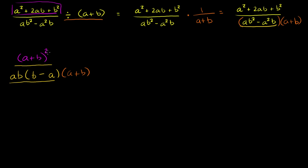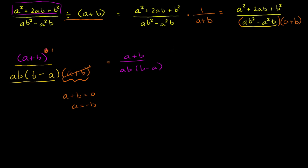We have a plus b squared in the numerator and a plus b to the first power in the denominator. We can cancel out one a plus b, which decrements the exponent by 1, so the numerator becomes a plus b and the a plus b in the denominator cancels out. Our answer is a plus b over ab times b minus a. With the caveat that a cannot equal negative b, since that would make the original expression undefined.